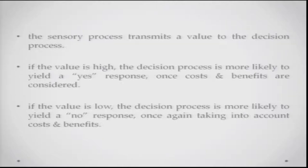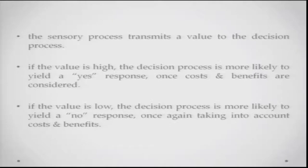Leaving aside this kind of process, let us talk about the sensory processes. The sensory processes transmit a particular value to the decision-making module. If this value is considerably high, the decision is more likely to yield a yes response — because you have enough evidence, whether about the brightness of light or temperature in the room. If the value given by the sensory processes to the decision-making processes is low — the evidence is less — then basically you are more likely to yield a no response.